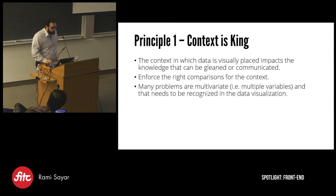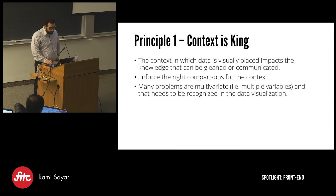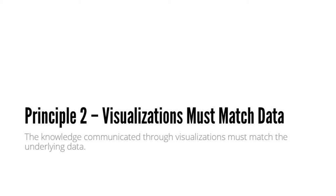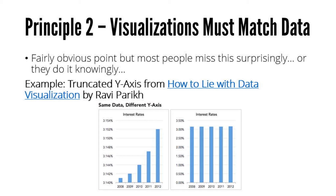So the context in which data is visually placed impacts that knowledge. Enforce the right comparisons, and don't forget that many problems are multivariate — multiple variables could impact why the data is the way it is. The second principle is that visualizations should match the data — they must match the data story. That sounds really obvious, but I could just as easily rename this as anti-principle one: how to use data visualization to mask, cheat, and lie.